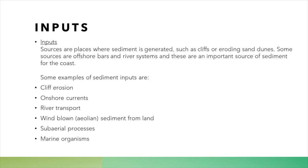Sediment cells are created by inputs, or areas where they get sediment from — these are the sources that generate the sediment. For example, cliffs, which erode the sediment, and also rivers that can bring sediment from inland. Some examples of sediment inputs are cliff erosion, onshore currents, river transport, aeolian or wind-blown sediment, sub-aerial processes, and marine organisms.